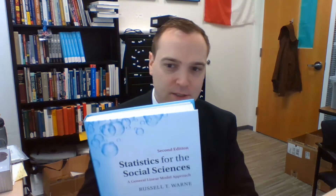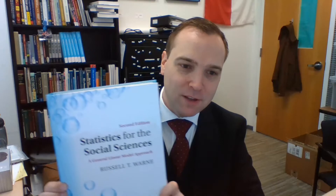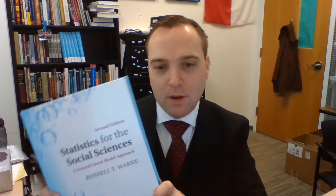Hi, I'm Dr. Russell Warren, and I'm an associate professor of psychology at Utah Valley University. I'm also the author of the textbook Statistics for the Social Sciences: A General Linear Model Approach, published by Cambridge University Press. I'm here to show you some of the features in the second edition of the textbook that you may find helpful for your students.